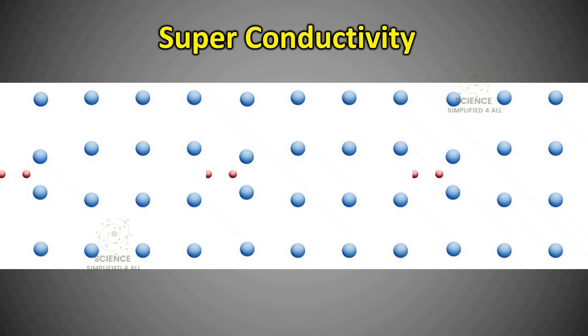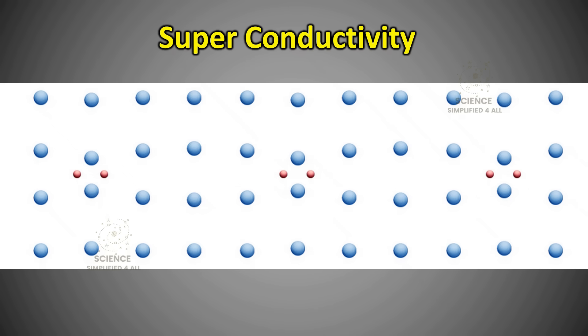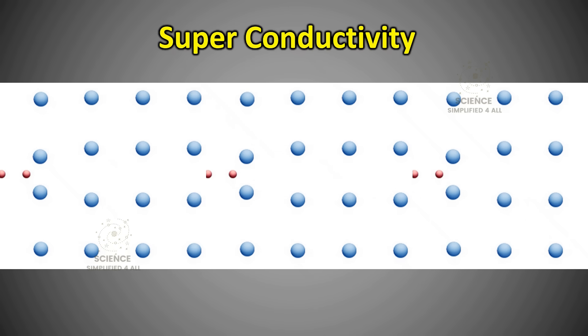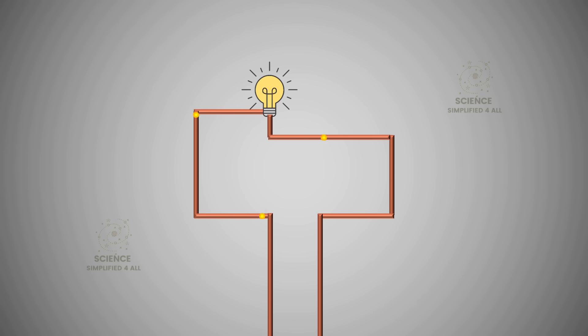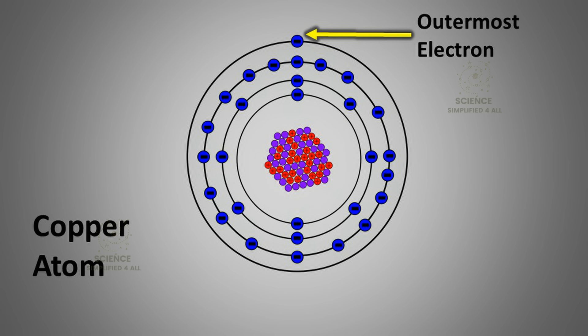Next, let us look at superconductivity. When certain special materials are cooled to extremely low temperatures, their electrical resistance drops to zero. This fascinating phenomenon is called superconductivity. Electric current, as we know, is the flow of electrons.